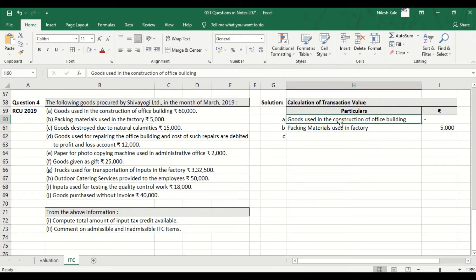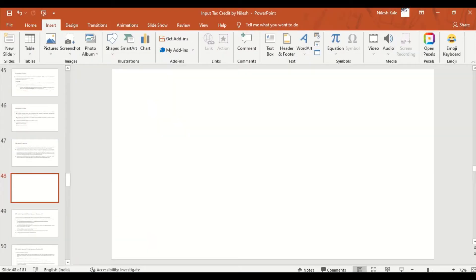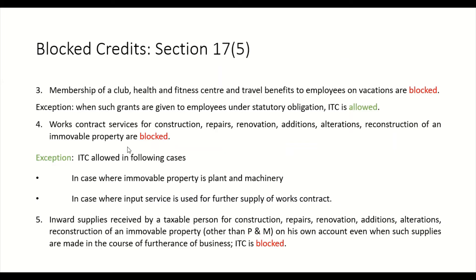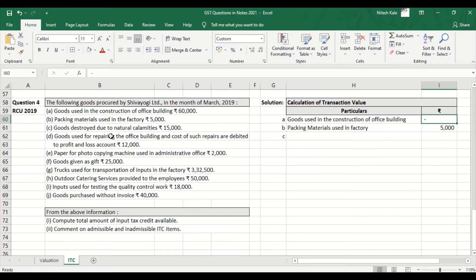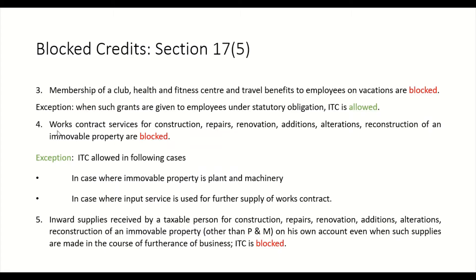Goods used in construction of office building — the building is immovable property. Looking at clause number four, immovable property is blocked. Under clause five, inputs used for construction of immovable property other than plant and machinery are blocked even when made in the course of furtherance of business. It is blocked.